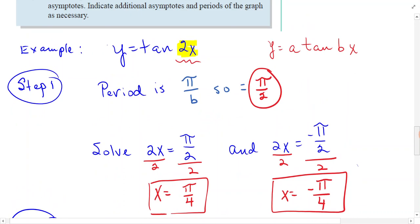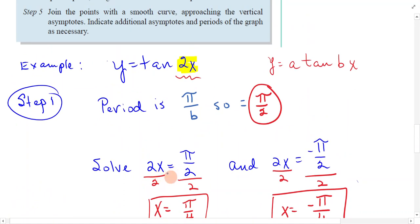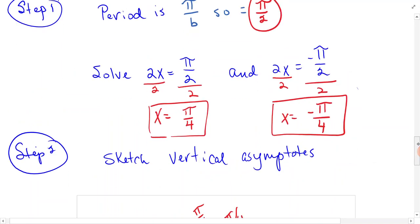You take 2x and set it equal to pi over 2 and negative pi over 2. Whatever you're taking tangent of, you're going to set equal to pi over 2 and negative pi over 2 and solve. In this case, we divided by 2 and got pi over 4 and negative pi over 4. Those are our two vertical asymptotes in this one period.